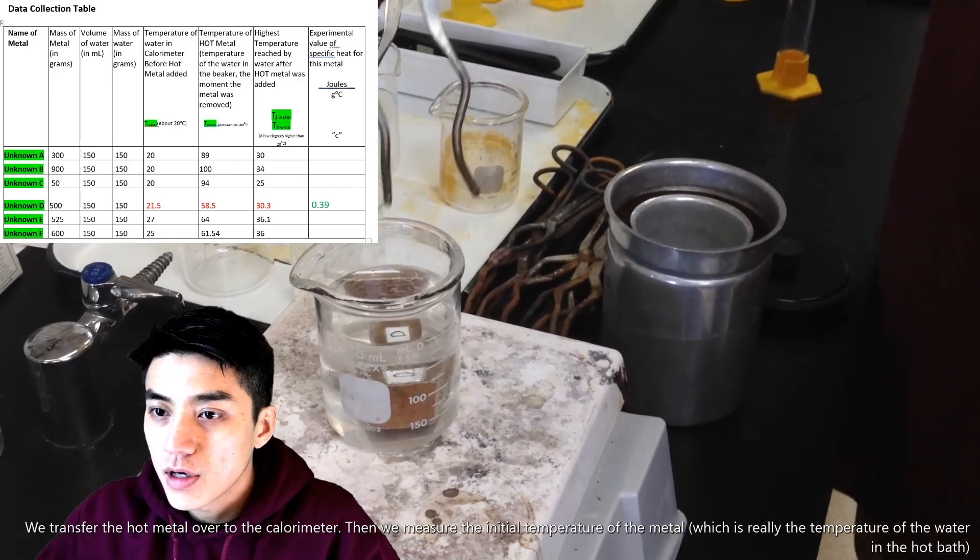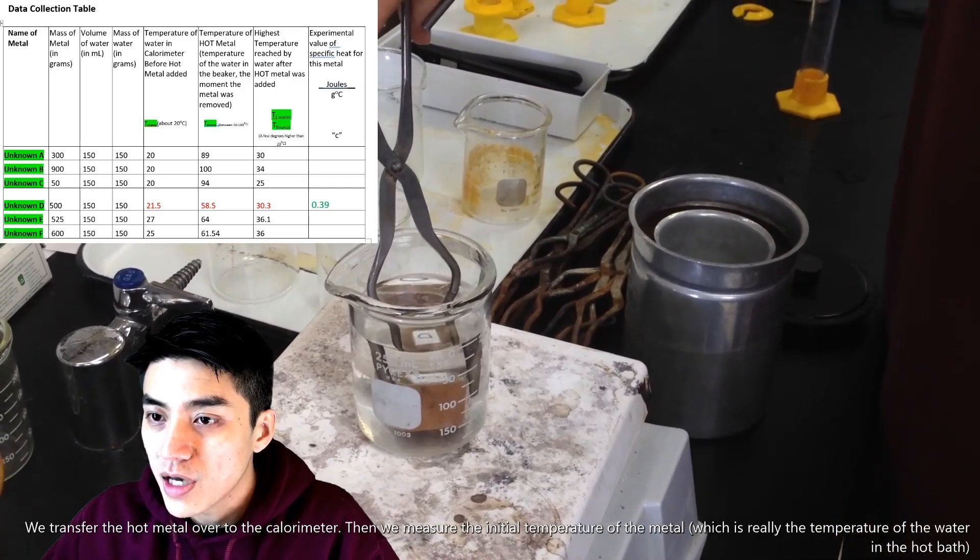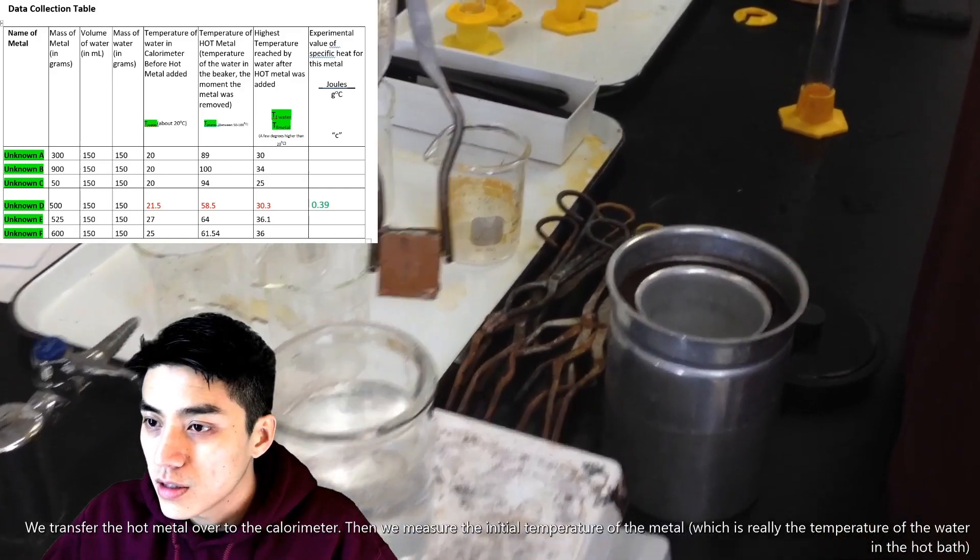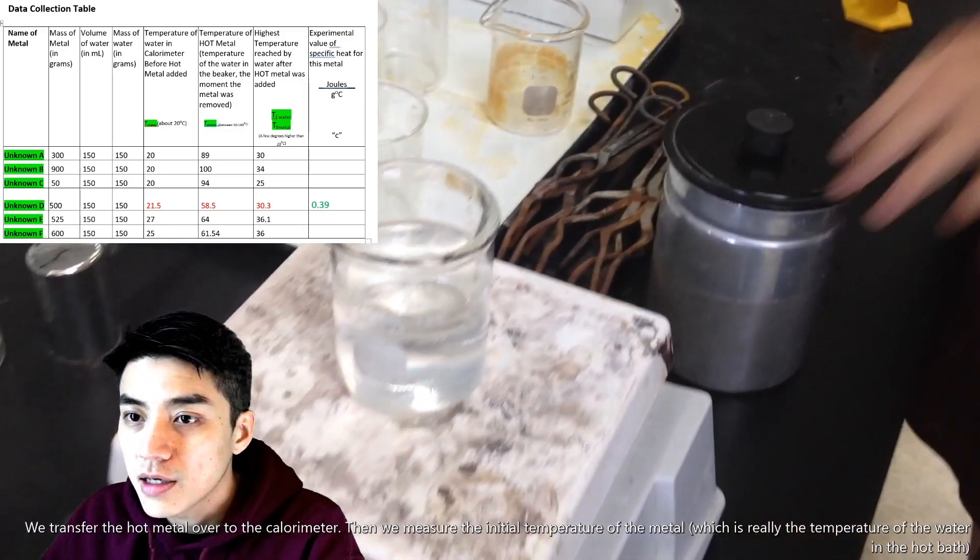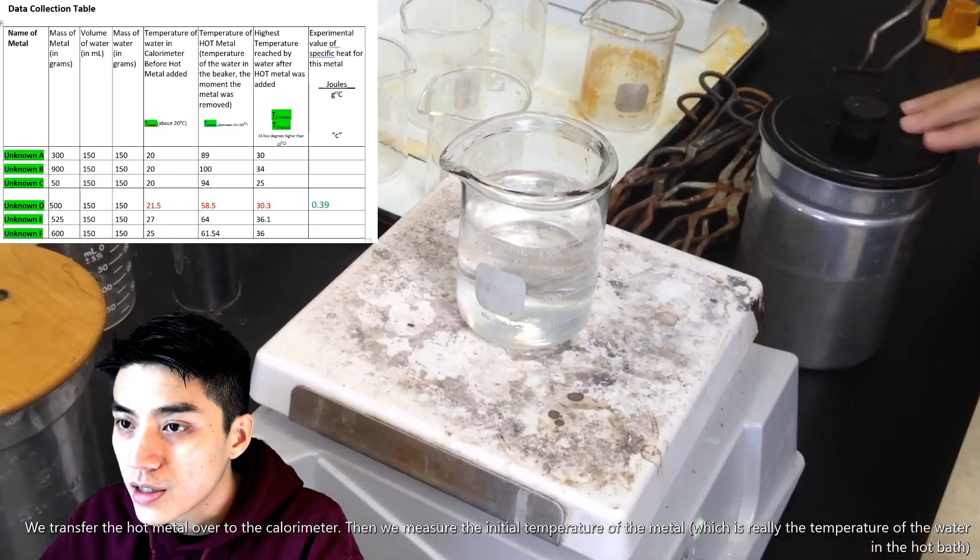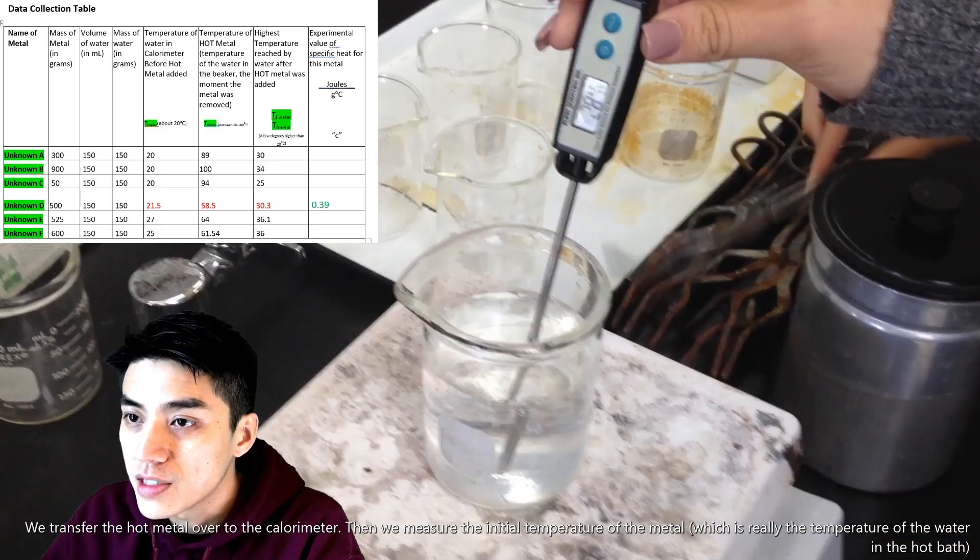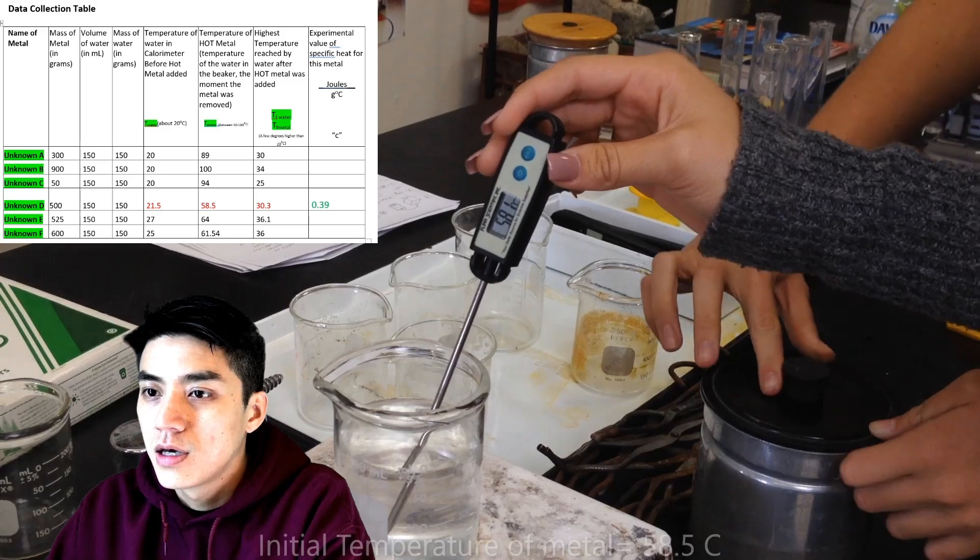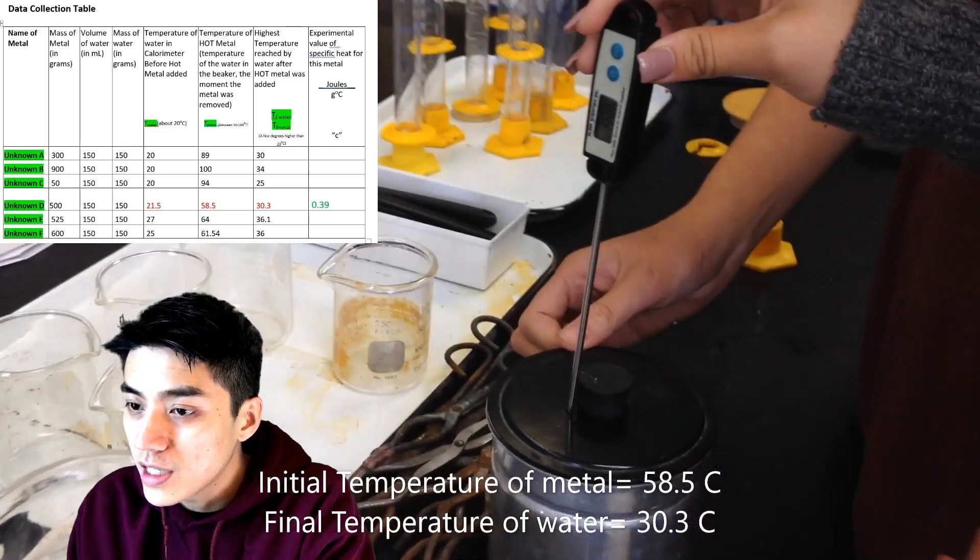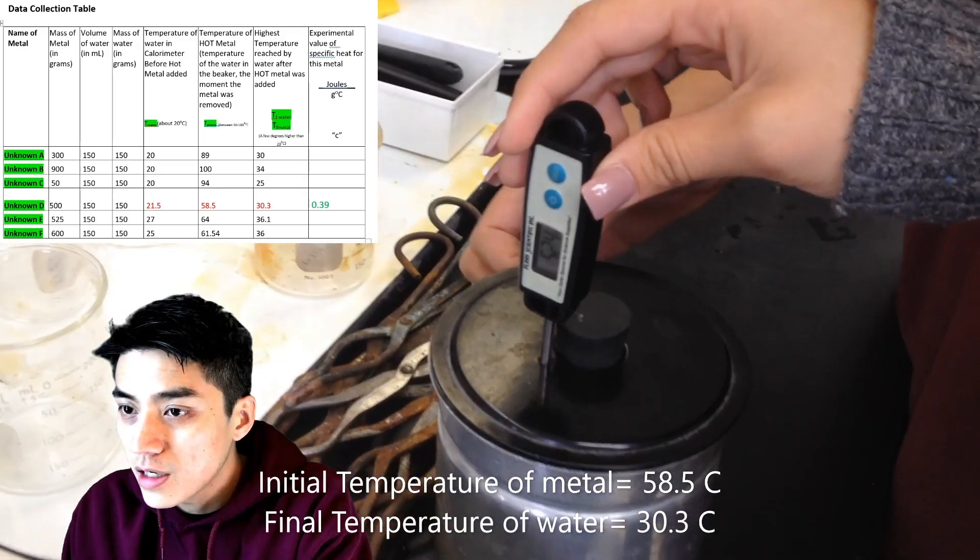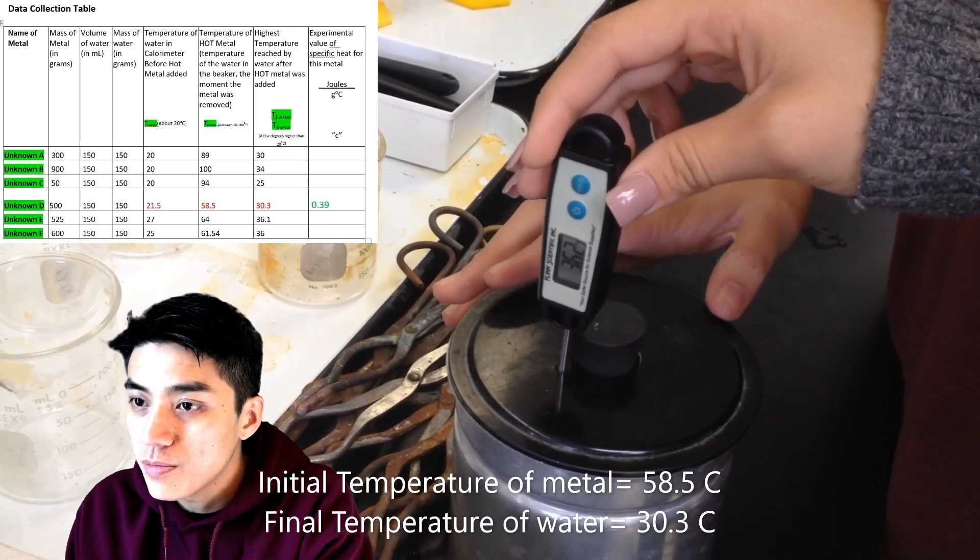So after the metal has been heating up for quite some time in the hot bath, you're going to transfer this over to the calorimeter. Then you close the lid. Then you need to come back and you measure the temperature of the water in the hot bath because that represents the initial temperature of the metal. Now that you've allowed enough time for the metal to transfer its heat to the water inside the calorimeter, you get a reading of the final temperature of the water which is 30.3.